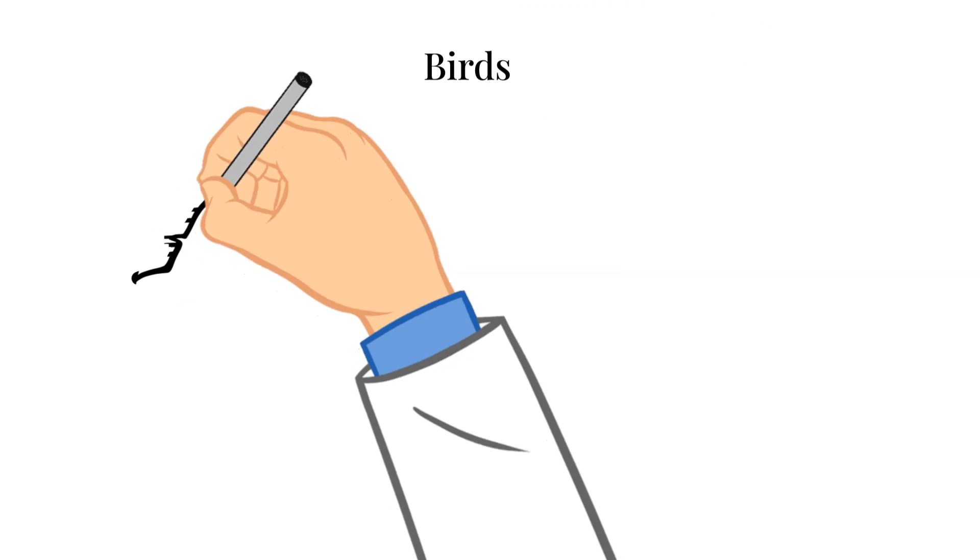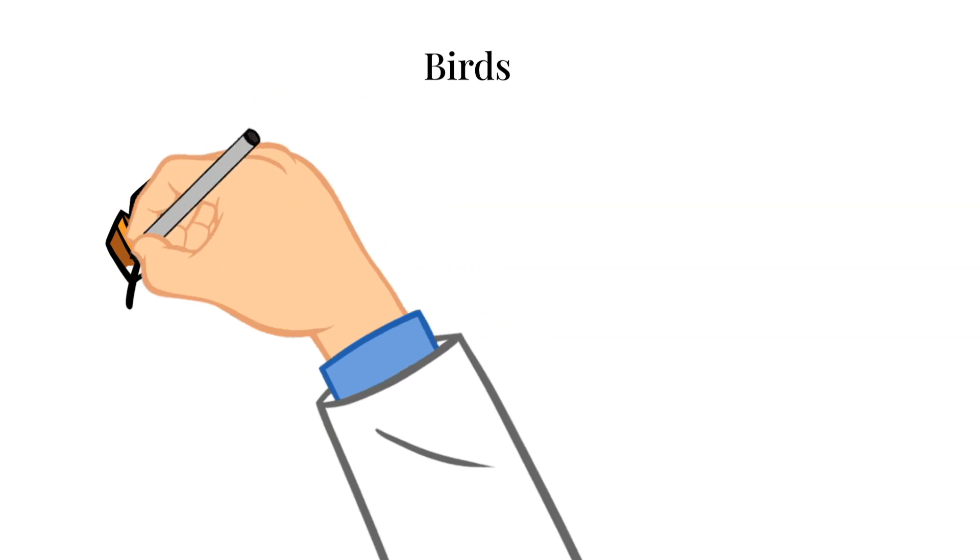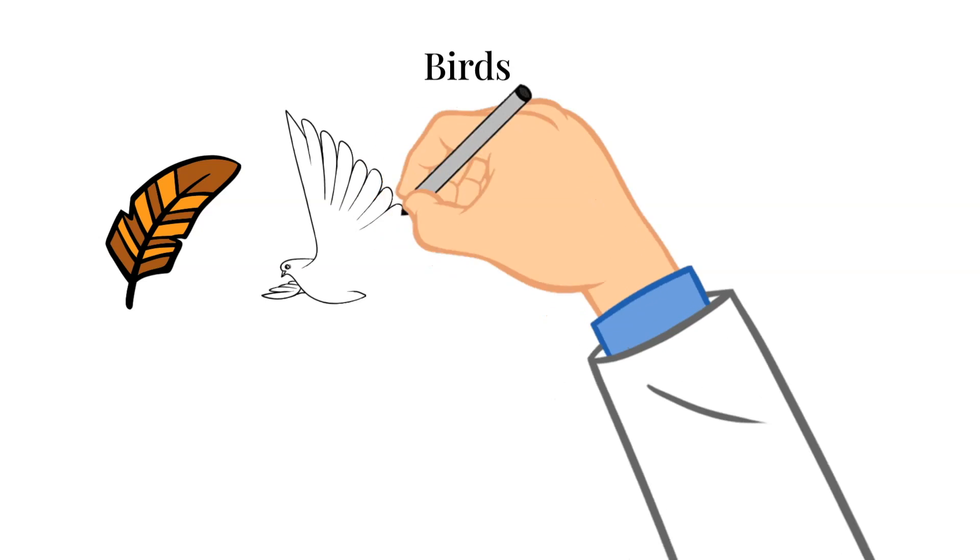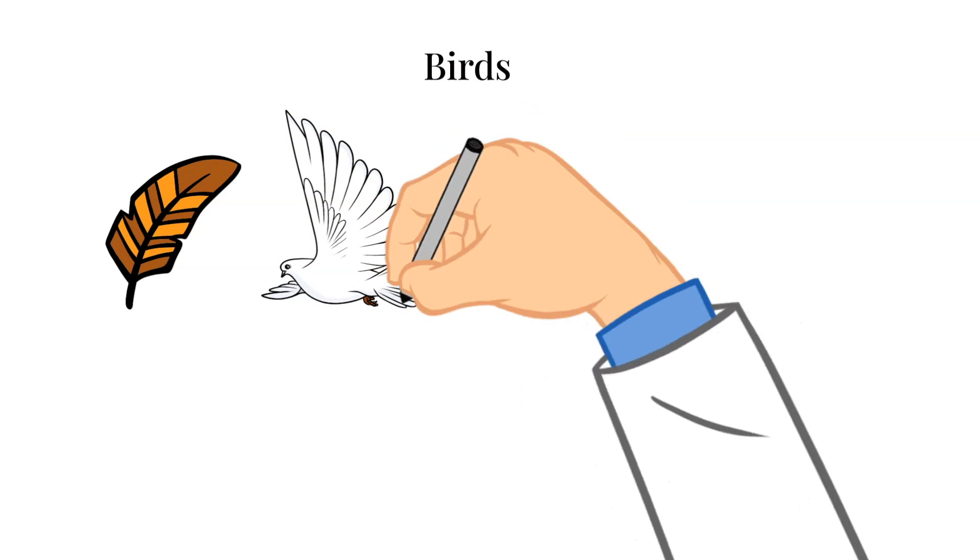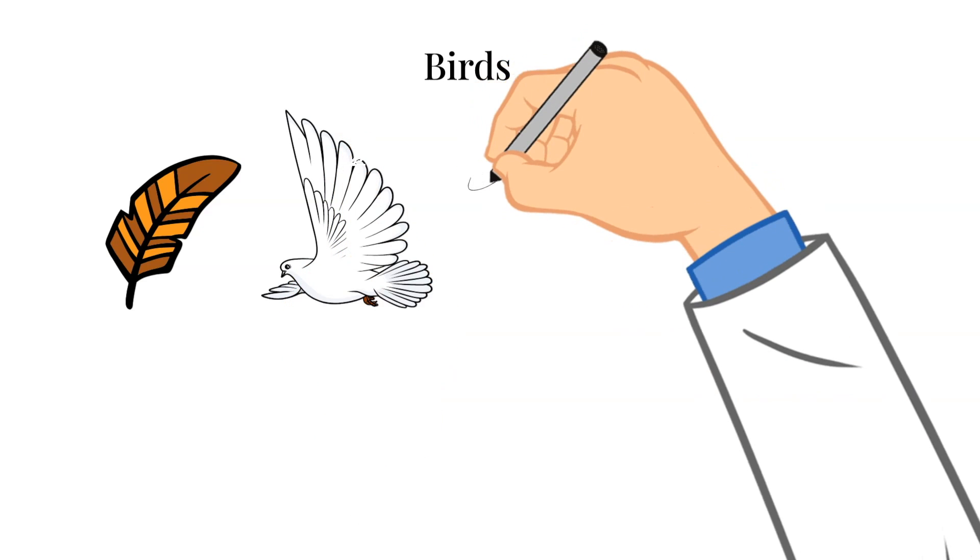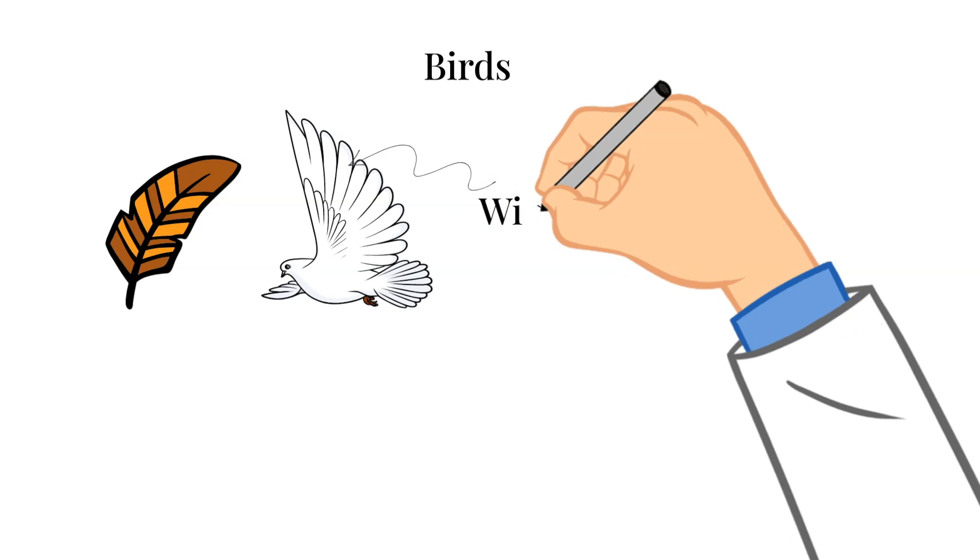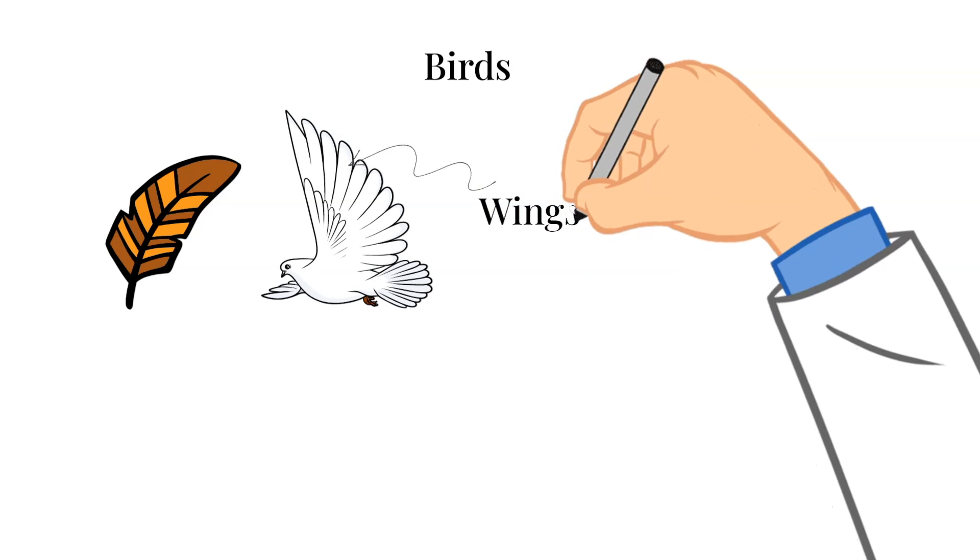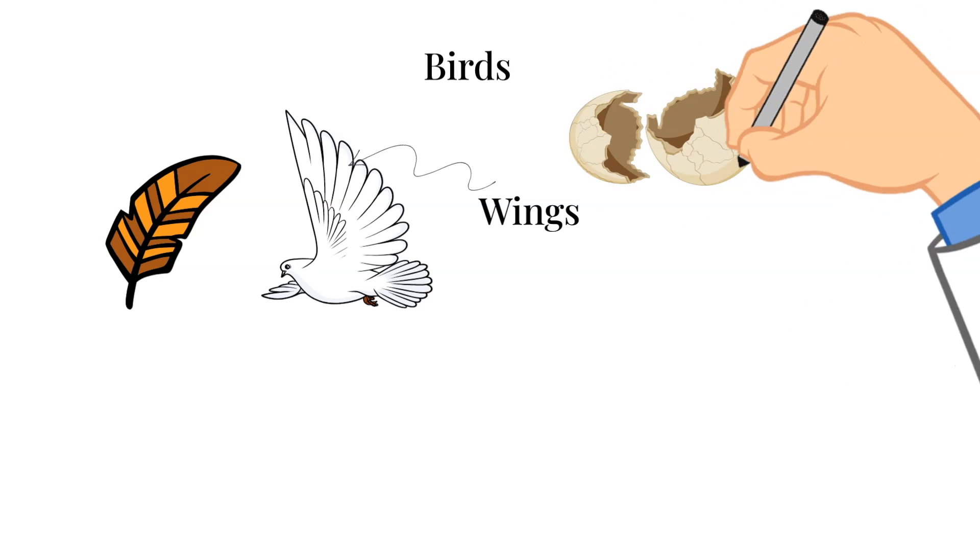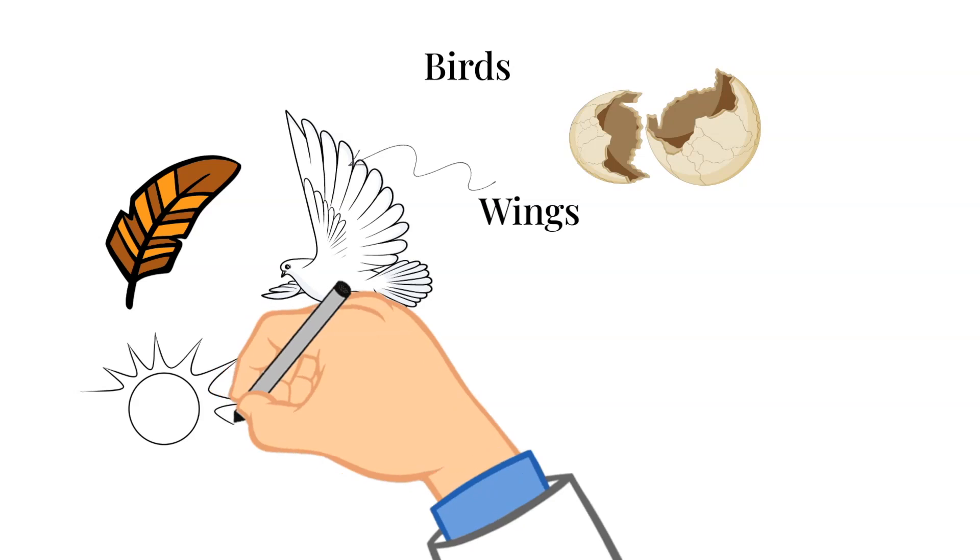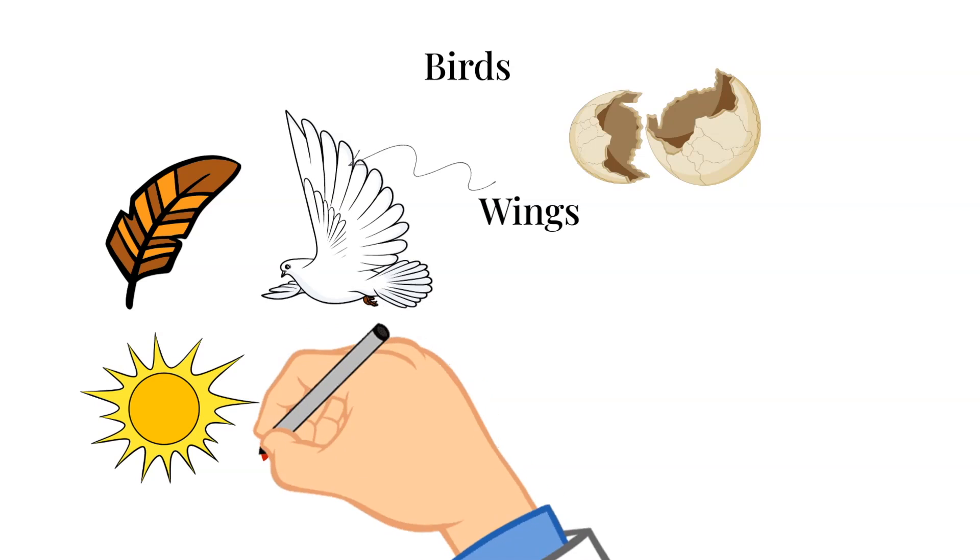Now let's move on to our last category in our vertebrates, and these are the birds. One of the unique characteristics of a bird is that they have feathers. No other animals have feathers. Another important feature of birds is that they also have wings and hollow bones to make them lighter so that they can fly easier. Birds lay eggs like reptiles and amphibians do, but they are not cold-blooded like reptiles and amphibians. They are warm-blooded like mammals.